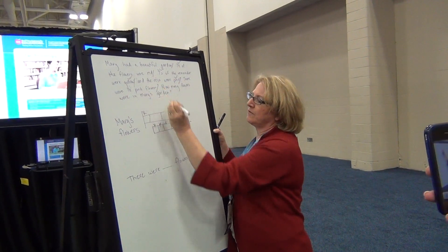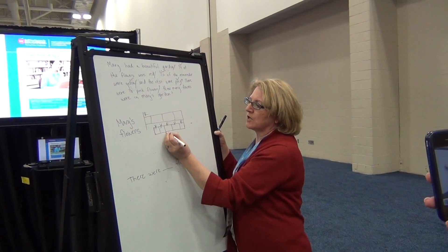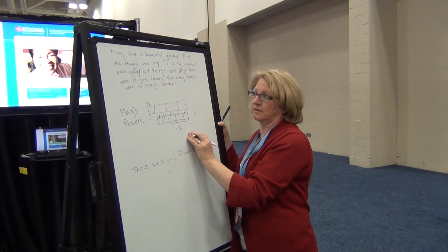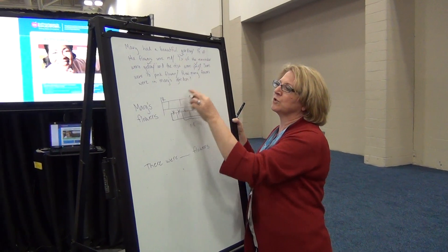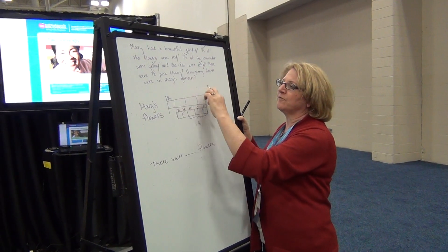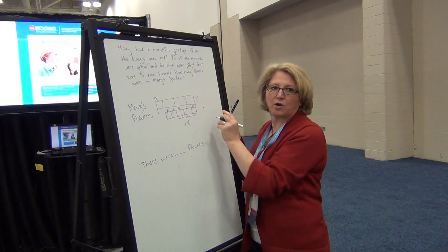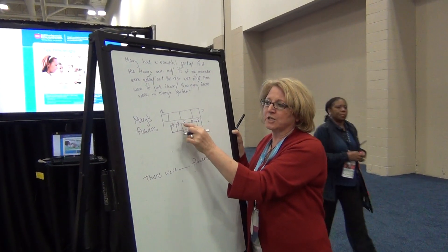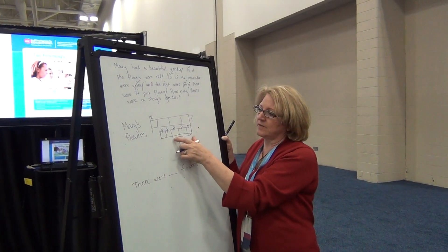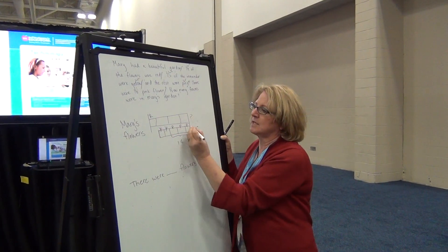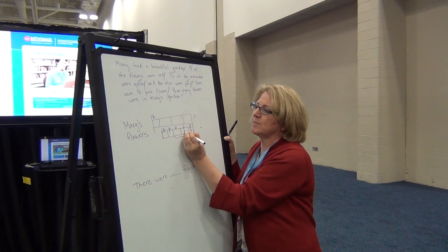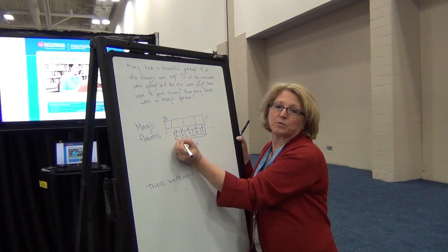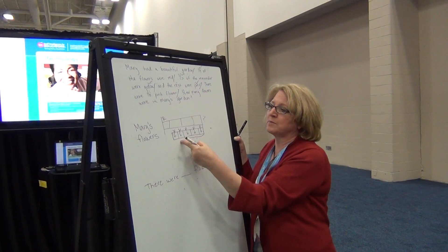'There were 18 pink flowers.' So this piece right here equals 18. 'How many flowers are in your garden?' I'm looking for the total flowers in your garden, and I put my question mark in place. So this is a fraction — these pieces are all equal, and this piece equals 18. So each piece must equal 6. That means these pieces have to also equal 6, so there must be 12 yellow.